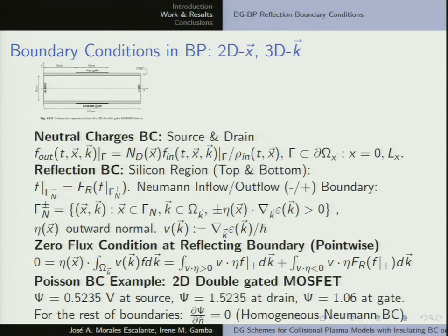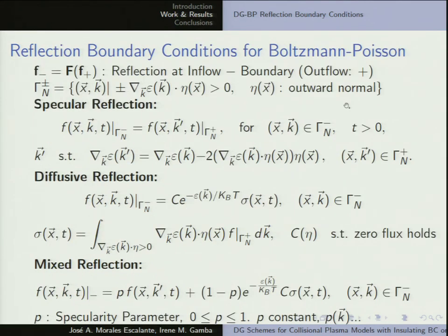In previous work, for devices like a MOSFET — a semiconductor device — the reflection boundary conditions used are usually specular reflection. What we will study is the inclusion of diffusive reflection or mixed reflection as a model of the roughness of the surface, to see the differences in the predictions in the computational simulations.